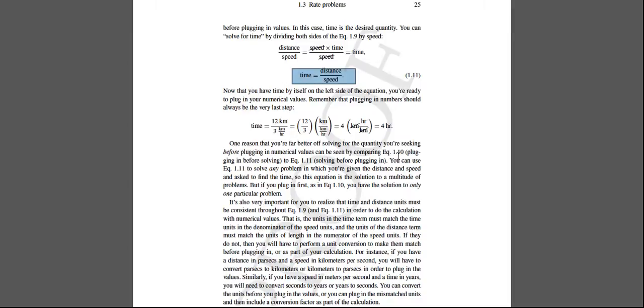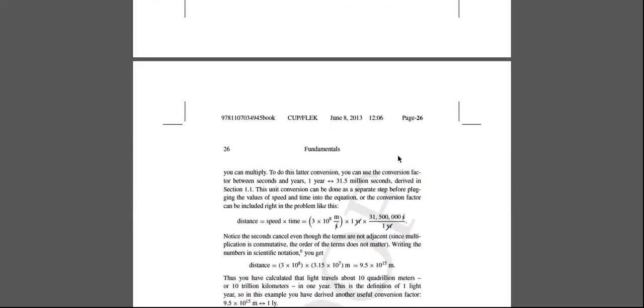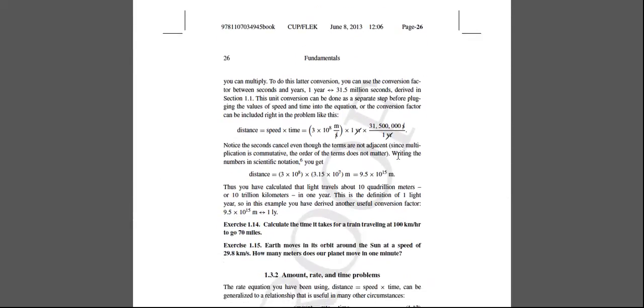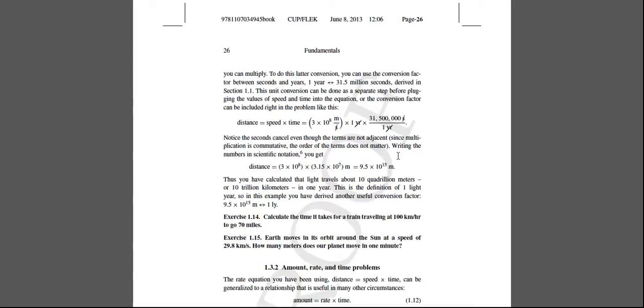We do another example starting at the bottom of page 25 of a distance-speed-time relationship problem. The example asks: how far does light travel in one year? We start with the equation already solved for distance, since we're given the speed and time and distance is what we're calculating. Plugging in the known speed of light and one year, the distance is calculated to be 9.5 times 10 to the 15 meters. This distance has such special meaning in astronomy that it's given its own unit — it's called a light year.